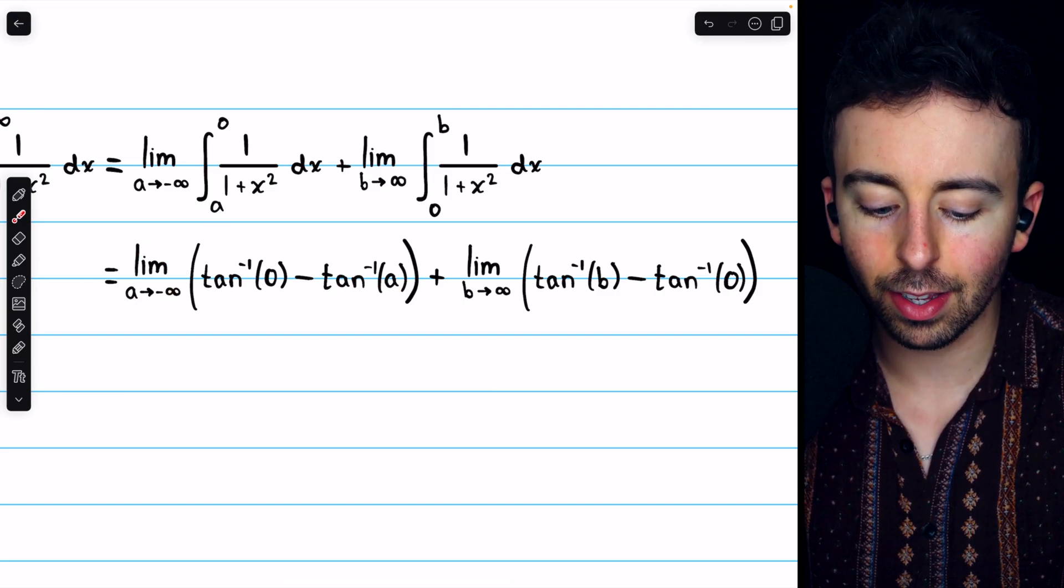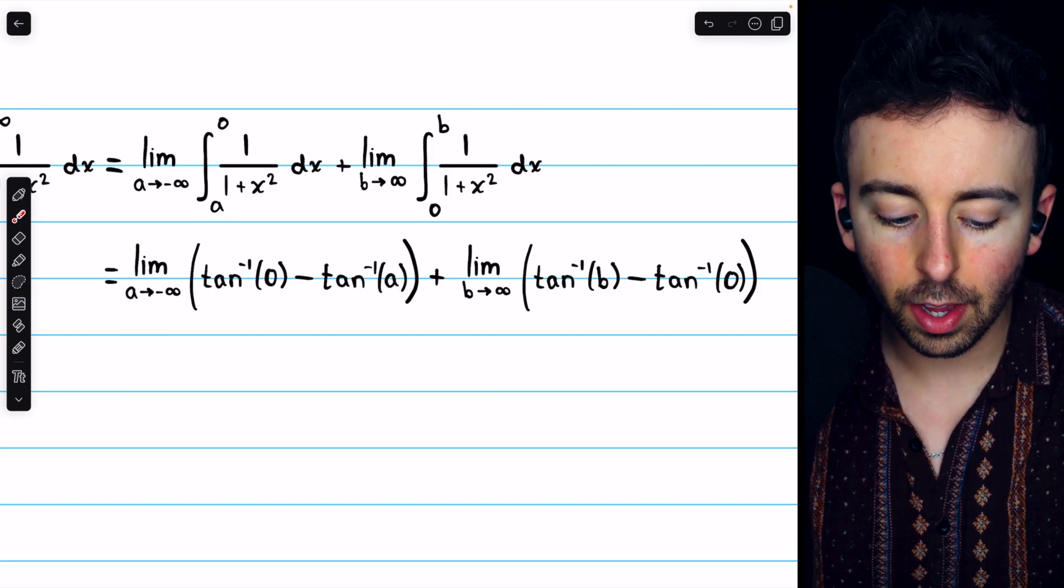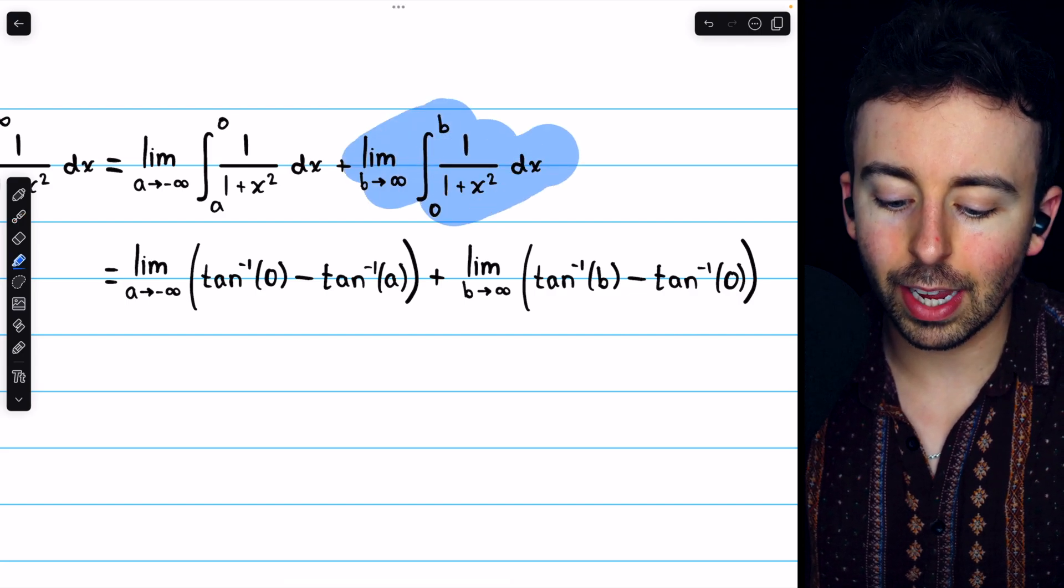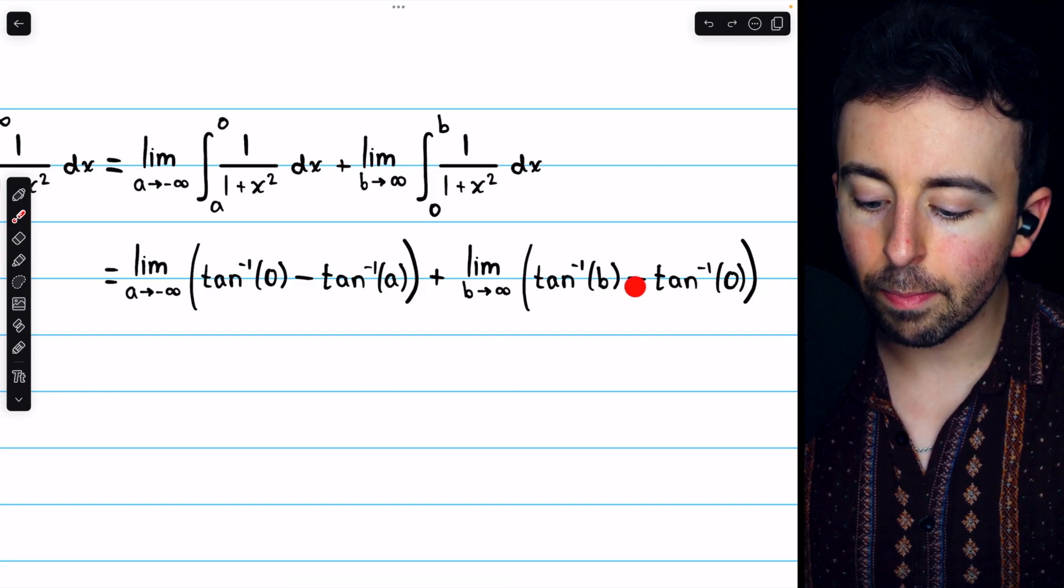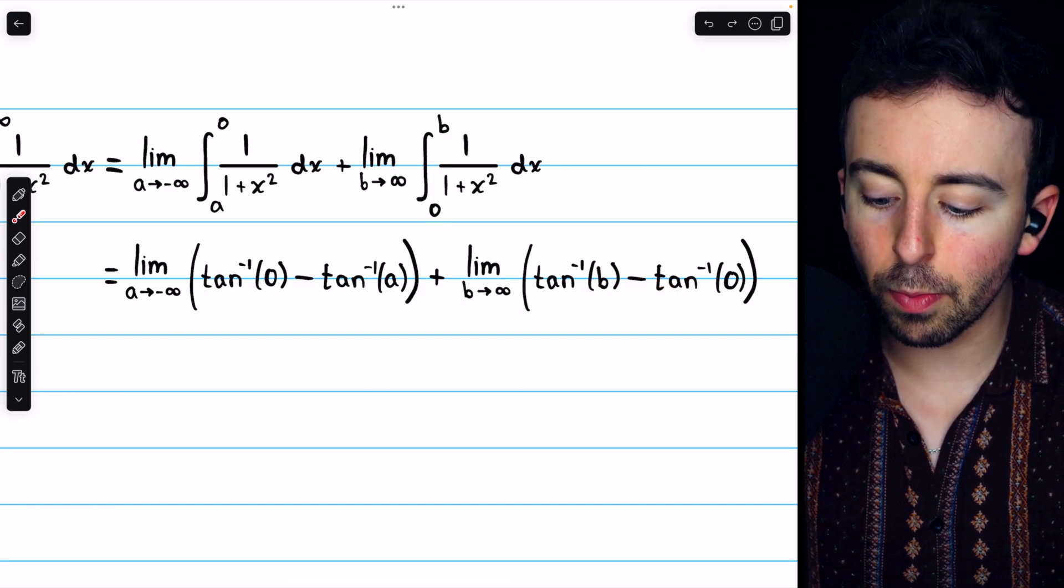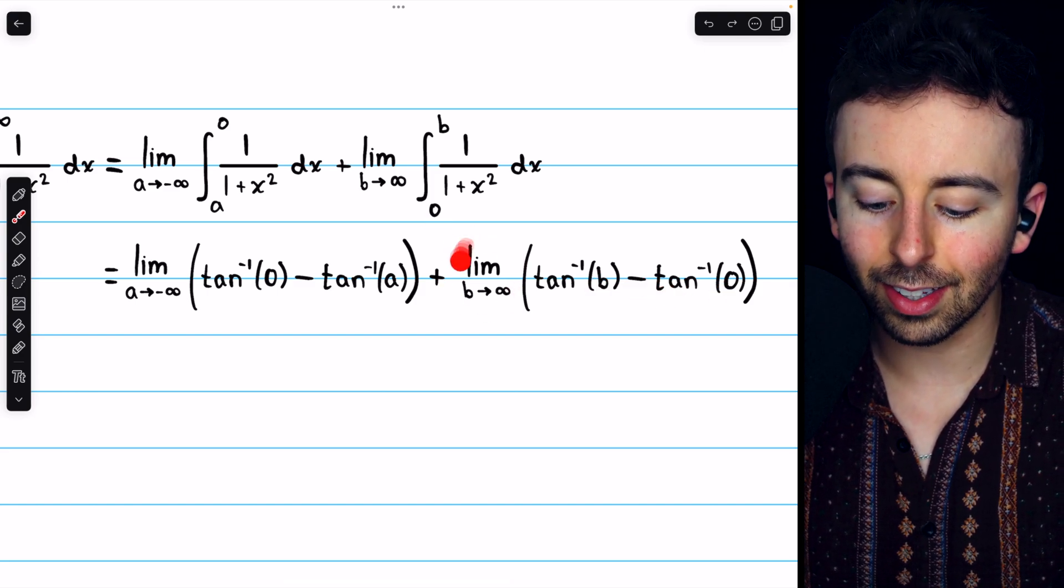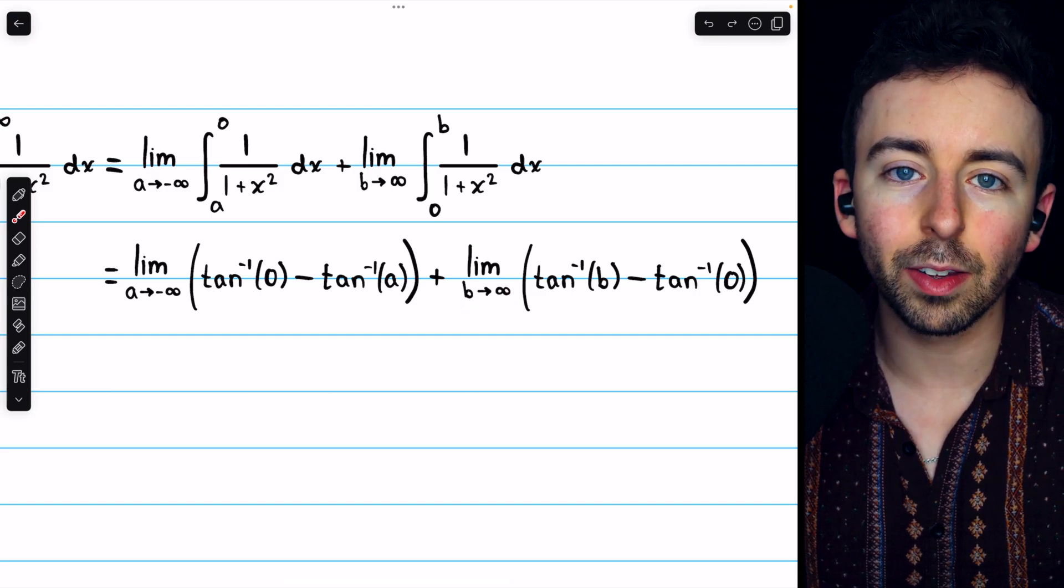And again, we're taking that limit as a goes to negative infinity. And then, with this limit and integral, we're going to have arc tan of the upper bound, b, minus arc tan of the lower bound, 0. And take this limit as b goes to positive infinity.